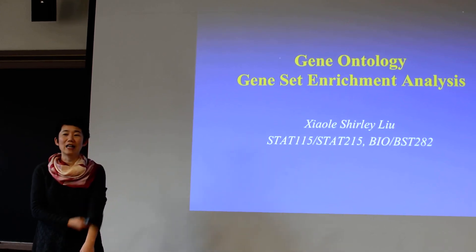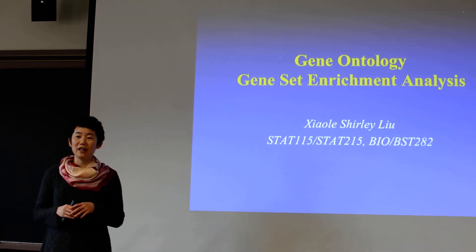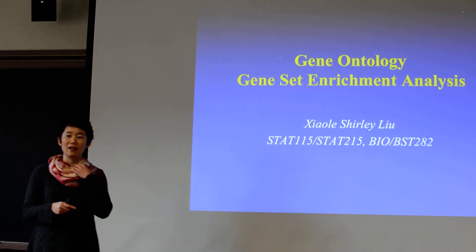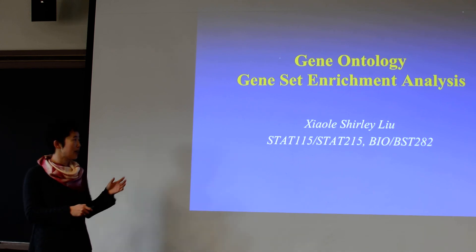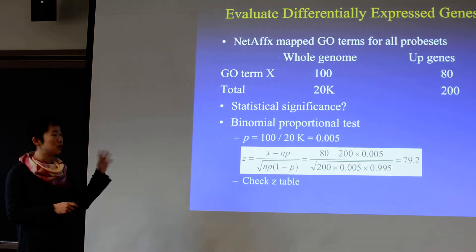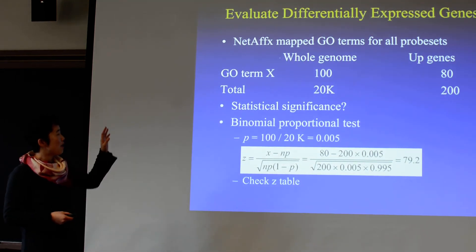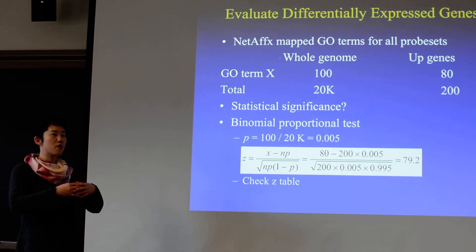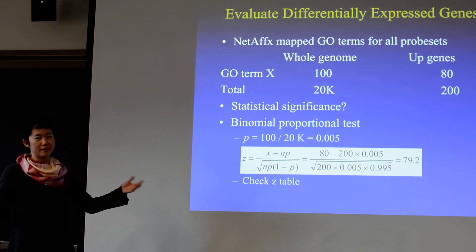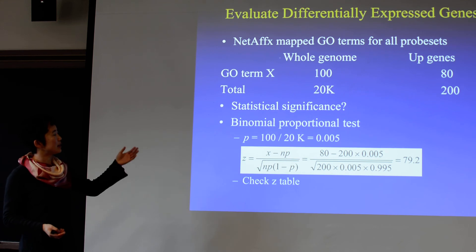All right, let's get started. We didn't plan to finish all gene ontology last time — it was a little rushed. So let's deal with the population. Remember, if you do a microarray experiment, overall, say you have 200 genes that are upregulated.